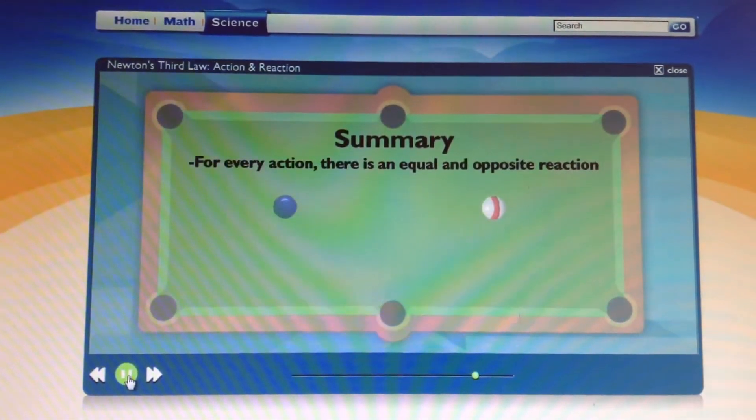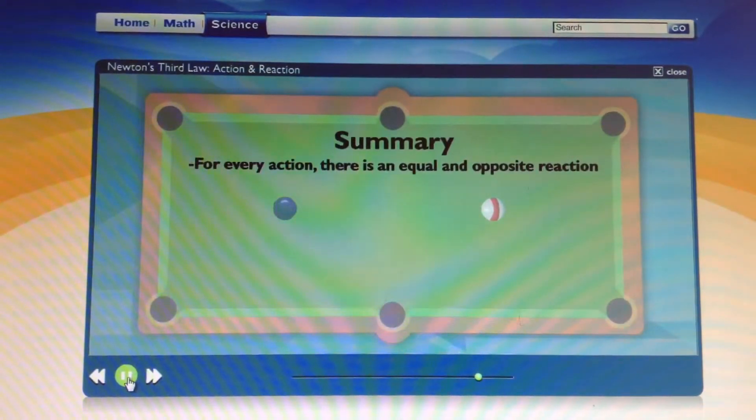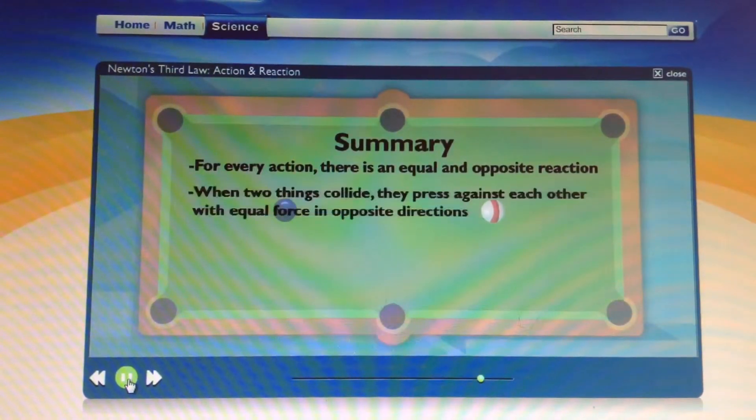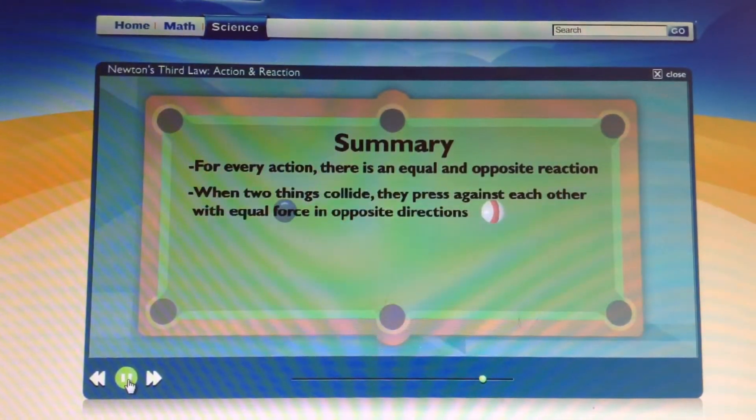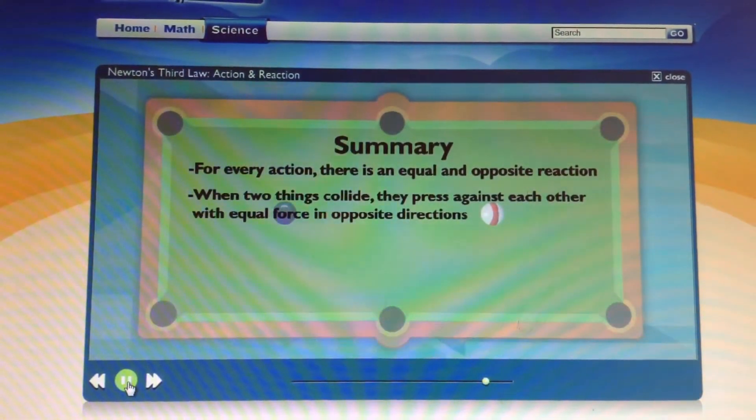Newton's third law says that for every action, there's an equal and opposite reaction. That means that when two things collide, they press with the same force, in opposite directions. That's why you and I both felt it when we bumped into each other.